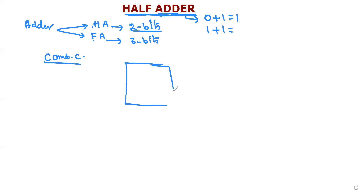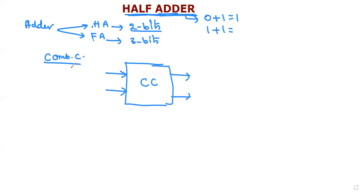I am drawing a block diagram — this is a combination circuit. A combination circuit takes inputs and produces outputs. The half adder and full adder are combination circuits. The addition operation takes given numbers as inputs and produces outputs.